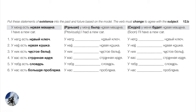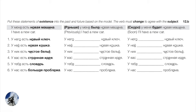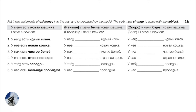Number five: У тебя есть словарь — you have a dictionary, a masculine noun. Past: У тебя был словарь. Future: У тебя будет словарь. Number six: У нас есть большая проблема — we have a big problem, a feminine noun. Past: У нас была большая проблема. Future: У нас будет большая проблема.